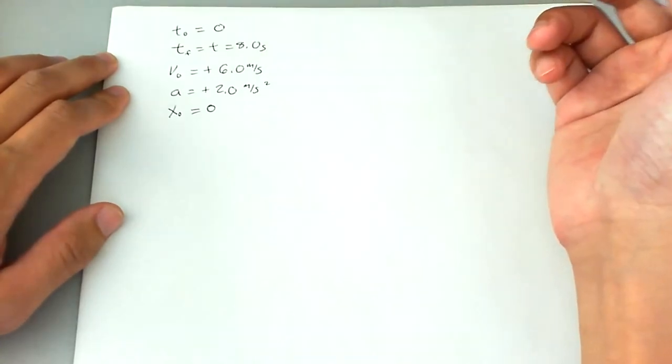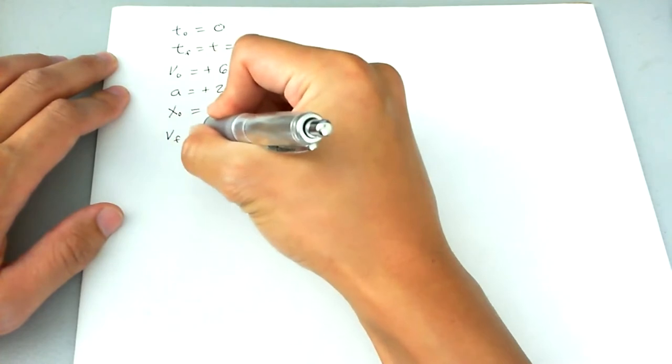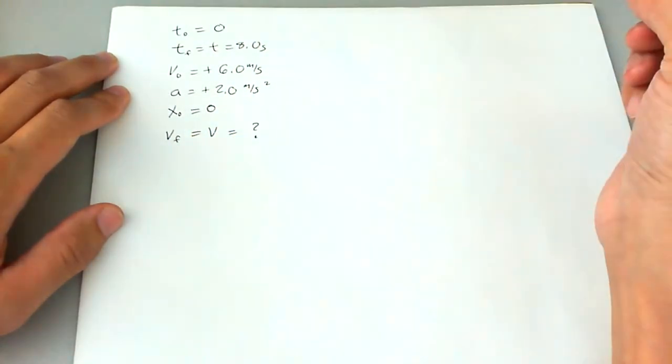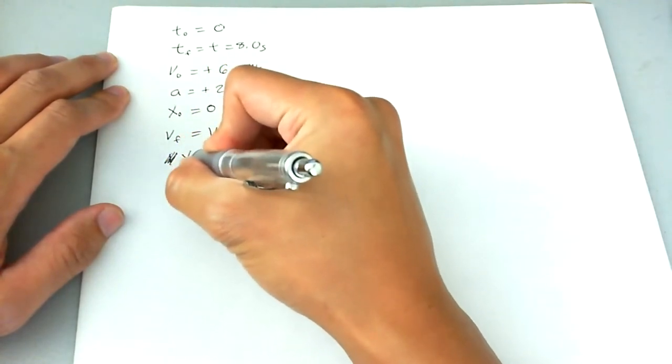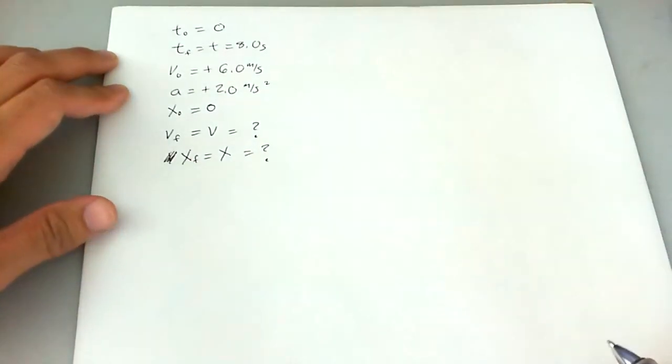So therefore, we have two things we want to find. They say to find the final velocity, or velocity, if you will, of the speedboat, and to find the final displacement, or you could just say the displacement at the very end.